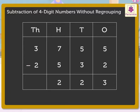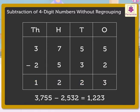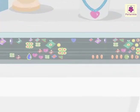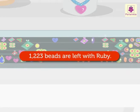Finally, subtract the numbers in the thousands column. That is, 2 from 3. We get 1, which we write in the thousands column. Hence, we get the number 1,223. We say the difference of 3,755 and 2,532 is 1,223. Thus, 1,223 beads are left with Ruby.